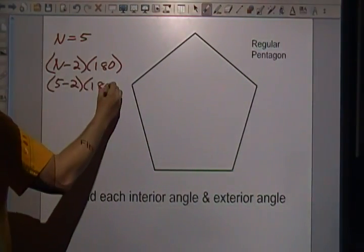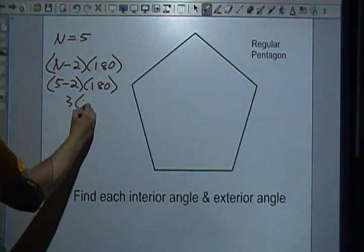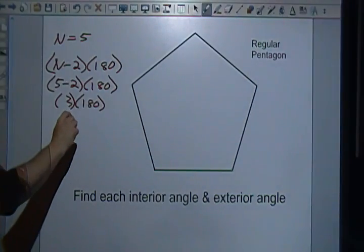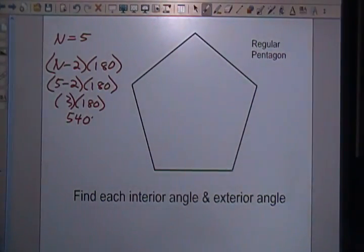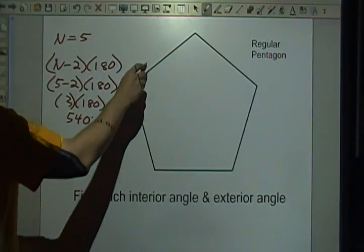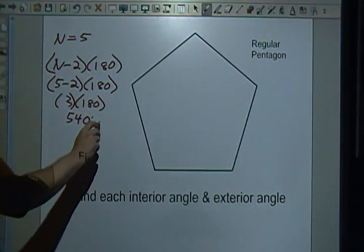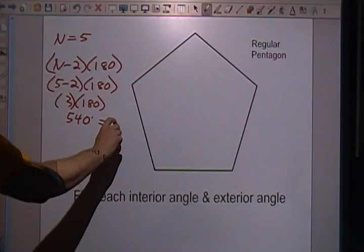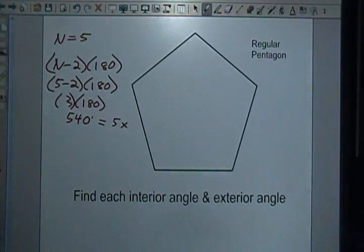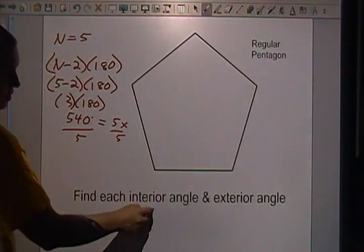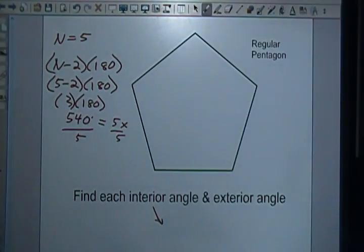3 times 180, or the number that we're looking for is 540. So each angle has to be the same, so it's 540, and how many angles do I have? 5. So 5x's. If I divide both sides by 5 here, I find out that each interior angle is going to be 108.